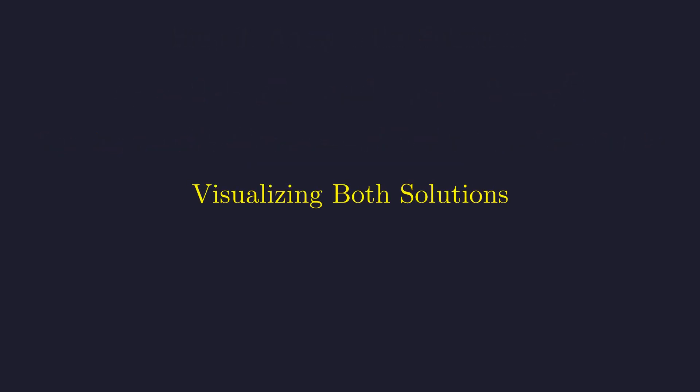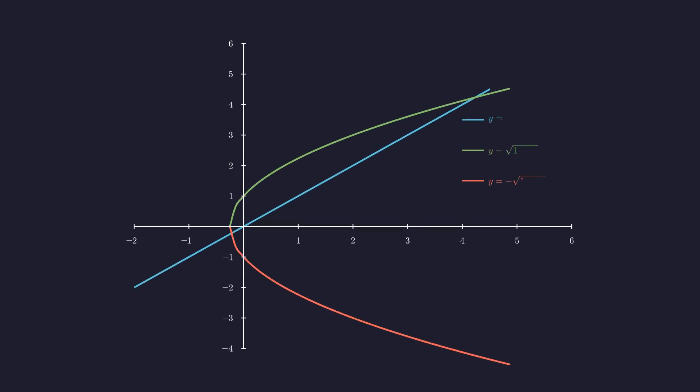But let me show you something cool. We can actually visualize why that extra solution appeared by graphing this problem. The solutions to our equation are where these two graphs intersect. Here's y equals x and here's y equals the square root of 1 plus 4x in green.